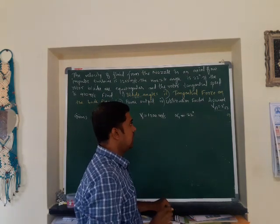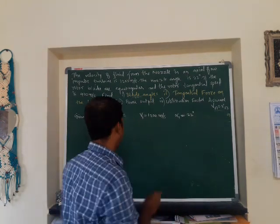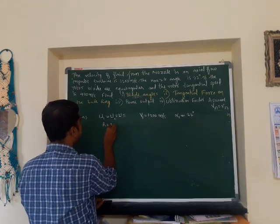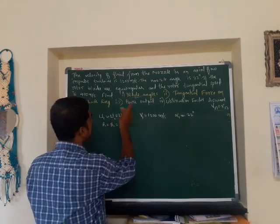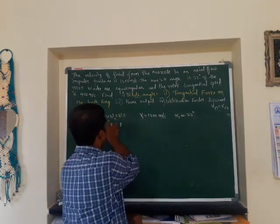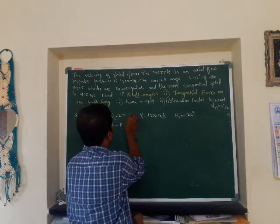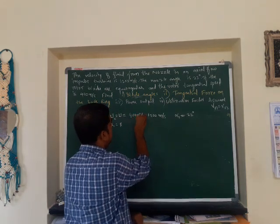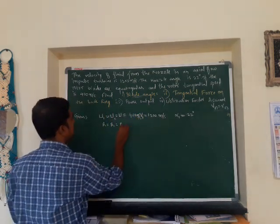The blades are equiangular, meaning blade angle beta1 equals beta2 equals beta. The rotor tangential speed U is equal to 400 meter per second. From the given data, we have to find the blade angles.